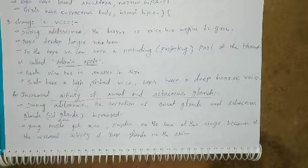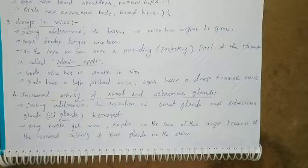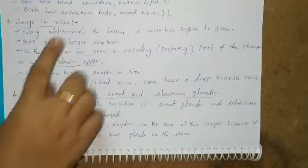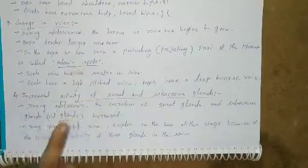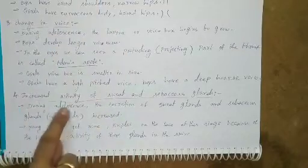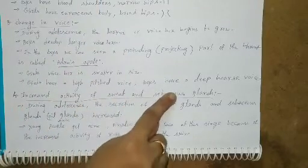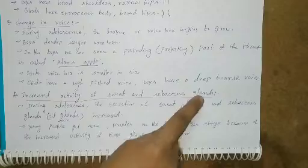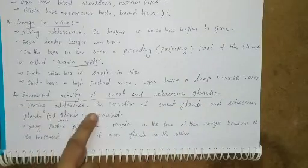Physical changes during adolescence. There are 4 changes: change in height, change in body shape, change in voice, and increased activity of sweat and sebaceous glands. During adolescence,